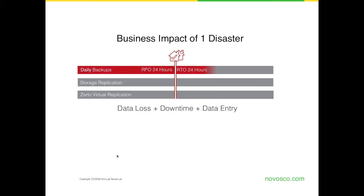This slide gives some idea of cost context — based on a US company with $100 million annual revenue. If you're relying on a single daily backup of your data and you have a disaster, you're failing back to at most 24 hours of previous data. You can lose up to 24 hours of new data, and it also takes time to bring data back off disk or backup storage devices to provision that environment back up again. So it's very costly to the business.